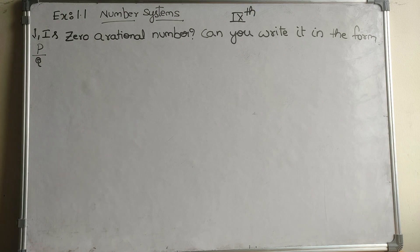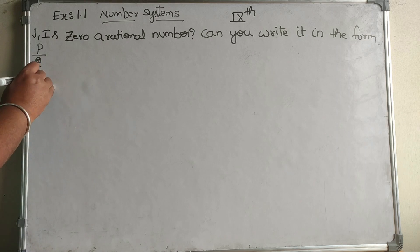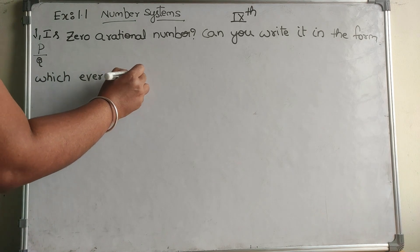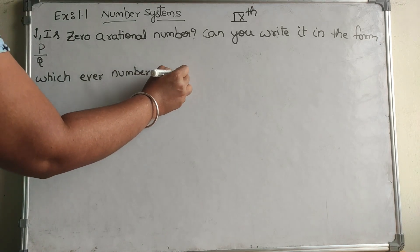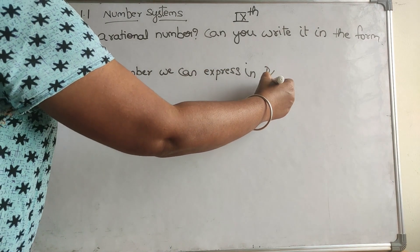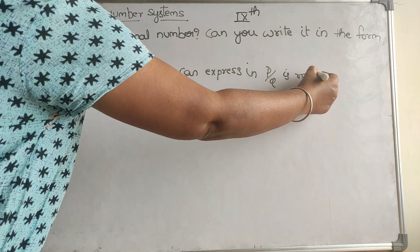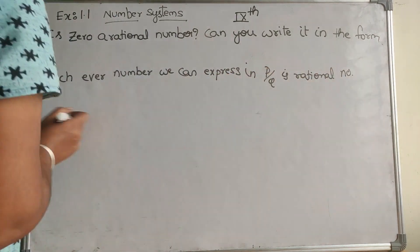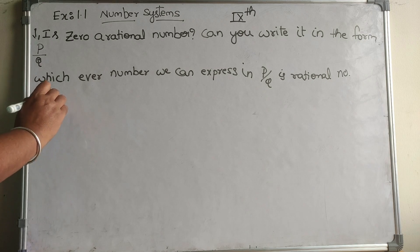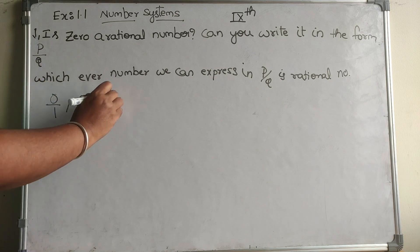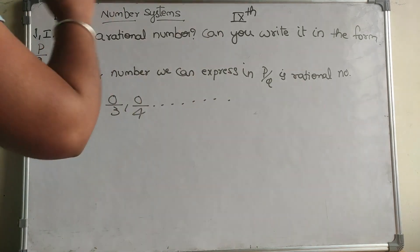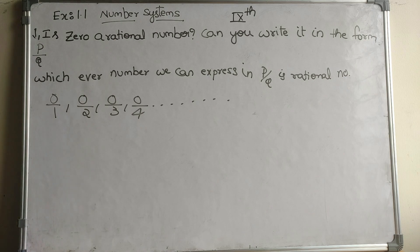Yes, 0 is a rational number. Whichever number we can express in P by Q form is a rational number. So how can you express 0 in the P by Q format? 0 by 1, 0 by 2, 0 by 3, 0 by 4, and so on. So 0 is a rational number. Thank you.